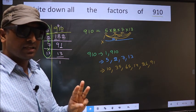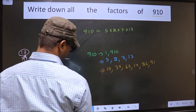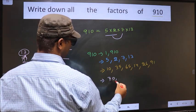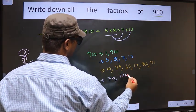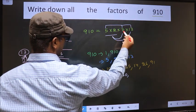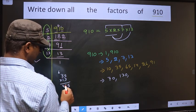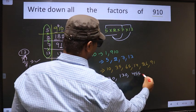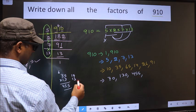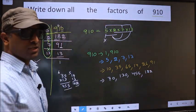Now take the combination of 3 numbers. Fix 5 and 2: 5×2=10, combine with 7: 10×7=70. Now combine with 13: 10×13=130. Now take 5 along with 7 and 13: 5×7=35, and 35×13=455. Now leave 5 and take 2, 7, and 13: 2×7=14, and 14×13=182. No other combination is possible.